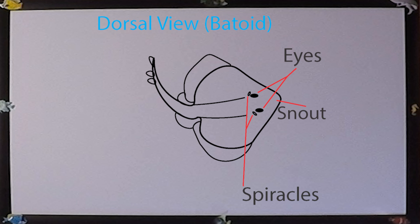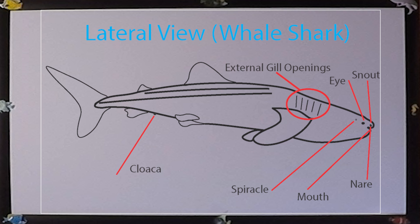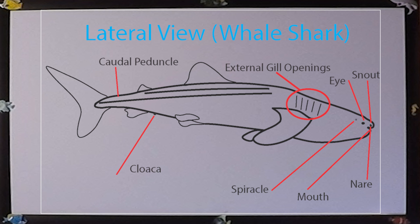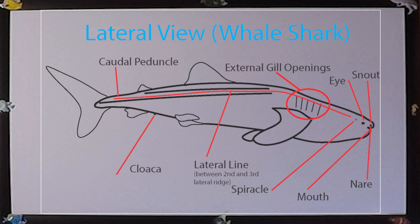Bottom-dwelling batoids have very large spiracles that water flows into. The cloaca, which serves as both a urogenital passage and an anal passage in one, is anterior to the anal fin. The caudal peduncle is the part of the body starting at the end of the anal and dorsal fins. The lateral line, if visible to the naked eye, will be seen running laterally along the body — sometimes it is fragmented, and sometimes it is on the head.